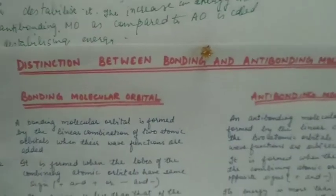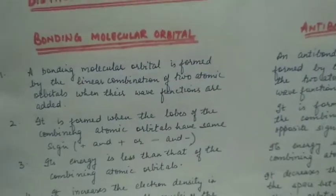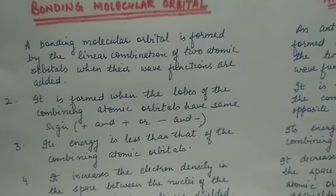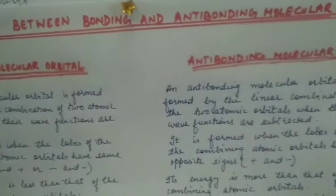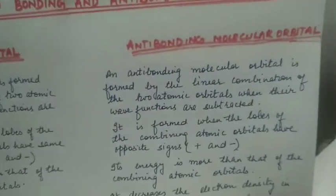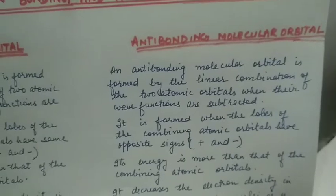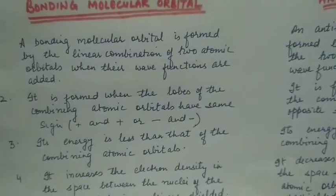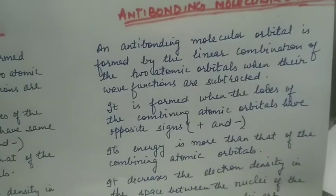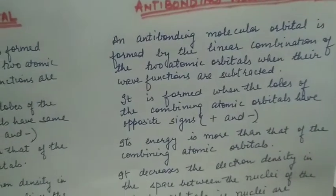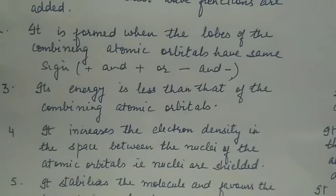Distinction between bonding and anti-bonding molecular orbitals: A bonding molecular orbital is formed by the linear combination of two atomic orbitals when their wave functions are added. An anti-bonding molecular orbital is formed by the linear combination of two atomic orbitals when their wave functions are subtracted. A bonding MO is formed when the lobes of combining atomic orbitals have the same sign — plus and plus, or minus and minus.